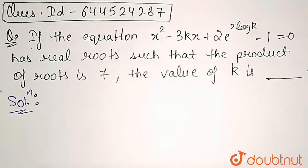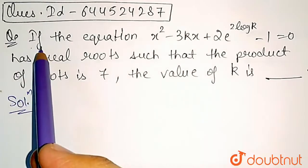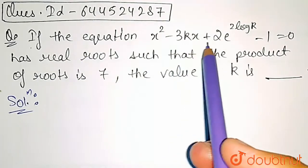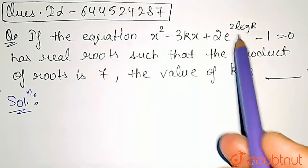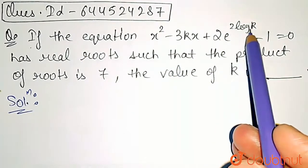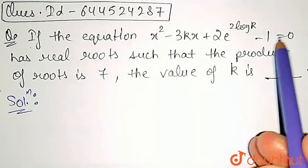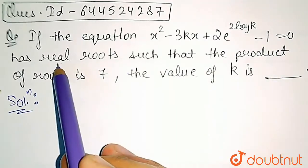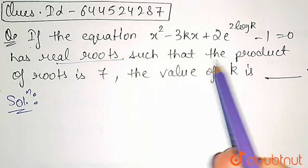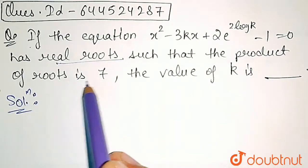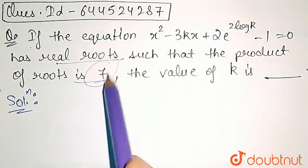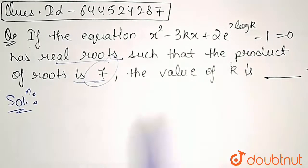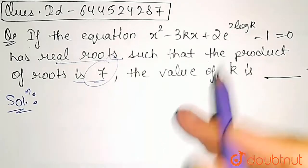In this question, it is given that the equation x squared minus 3kx plus 2 raised to the power 2 log k, minus 1, is equal to 0. It has real roots such that the product of roots is given as 7, and we need to find the value of k.